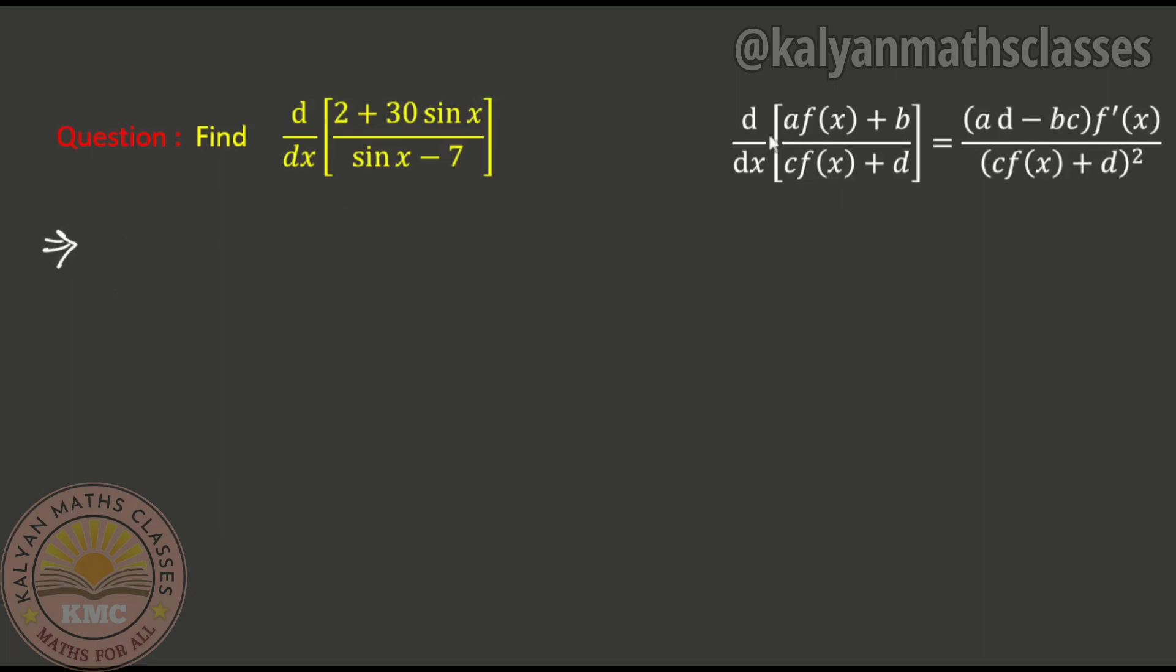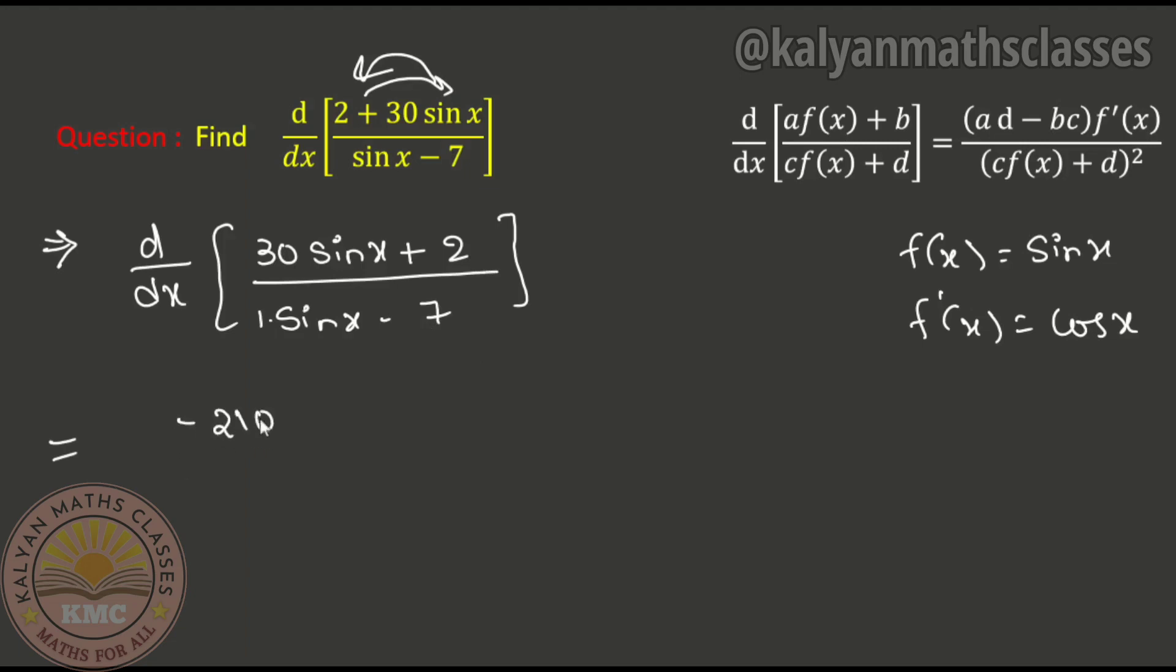This is the standard formula. Now let's take another example: d/dx of [30 sin x + 2]/[sin x - 7]. Here a is 30, b is 2, c is 1, and d is -7. So ad minus bc: 30 into -7 is -210, minus 2 into 1, which gives -212.